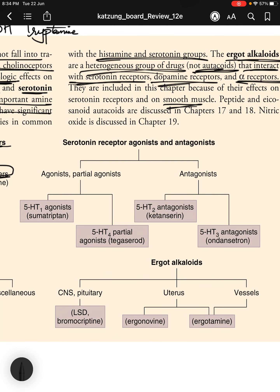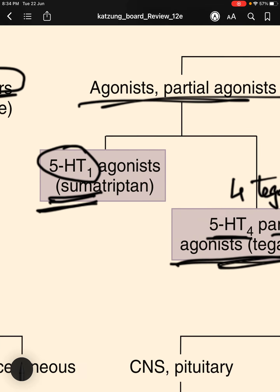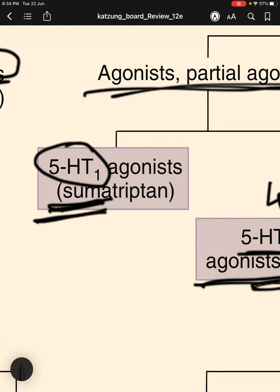For serotonin receptor agonists and antagonists: 5-HT1 agonists include sumatriptan — remembered as 'sumo' or a Telugu anchor named Suma — and 5-HT4 partial agonists include tegaserod, where 'tetra' (four) helps remember tegaserod. A memory aid: 5-HT4 partial agonist, and 4 is tetra, so tegaserod.